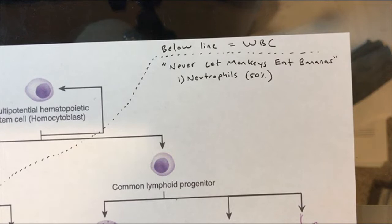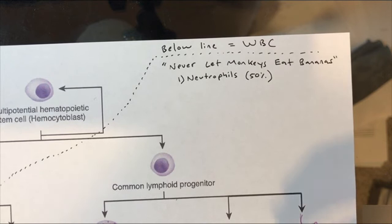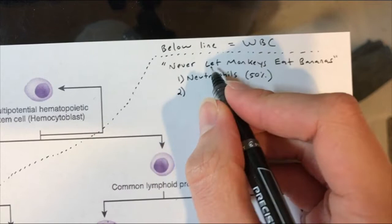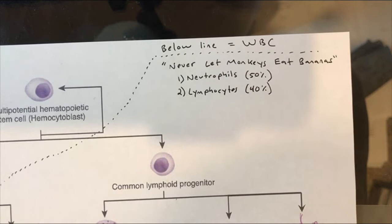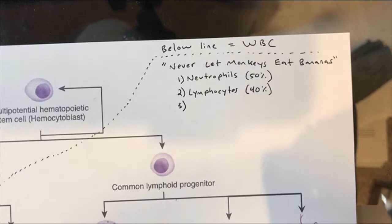Neutrophils have under a 24-hour lifespan. When you get a cut and have pus on the wound site, that pus is a result of those neutrophils gobbling up bacteria and other pathogens, and then essentially exploding because they're so full of pathogens — giving them that sort of white milky color. So they're the most prevalent. The L in the phrase stands for lymphocytes, which will be about 40% of your white blood cells. We'll talk about lymphocytes in more detail in a moment.